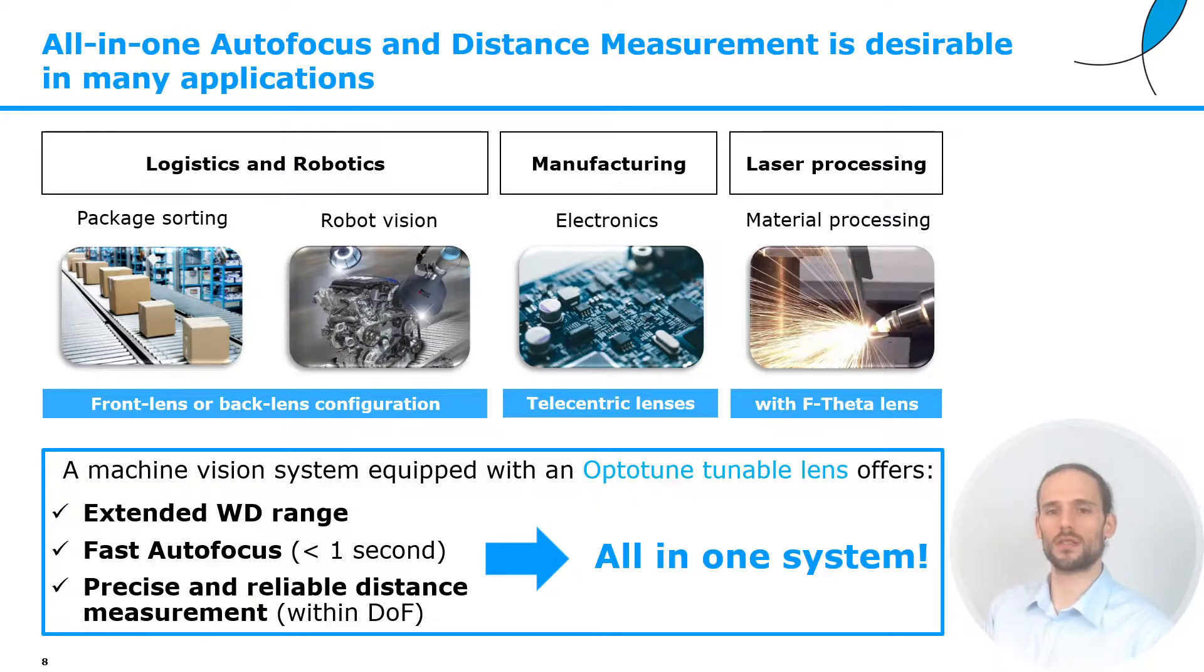Regardless of the specific application, a machine vision system that is equipped with an Optitune tunable lens can offer several advantages. Together with the already mentioned extended working distance range, we can have a fast autofocus, faster than a second, and a precise and reliable distance measurement sensor. I want to stress that this is all in one system without the addition of any extra hardware.